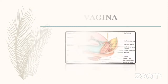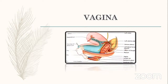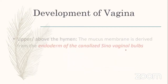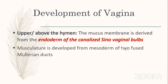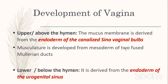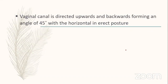Moving to internal genitalia — the vagina. Embryological development: above the hymen, the mucous membrane is derived from the endoderm of canalized sinovaginal bulbs, and the musculature from the mesoderm of two fused Müllerian ducts. Below the hymen, the lower part is derived from the endoderm of the urogenital sinus.